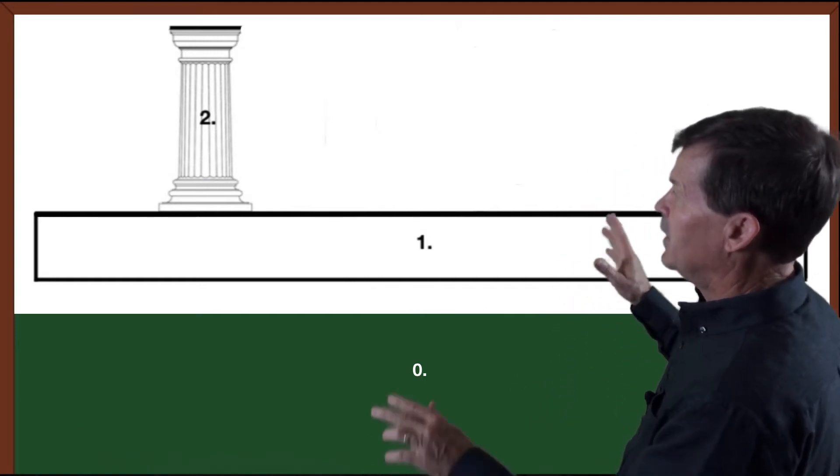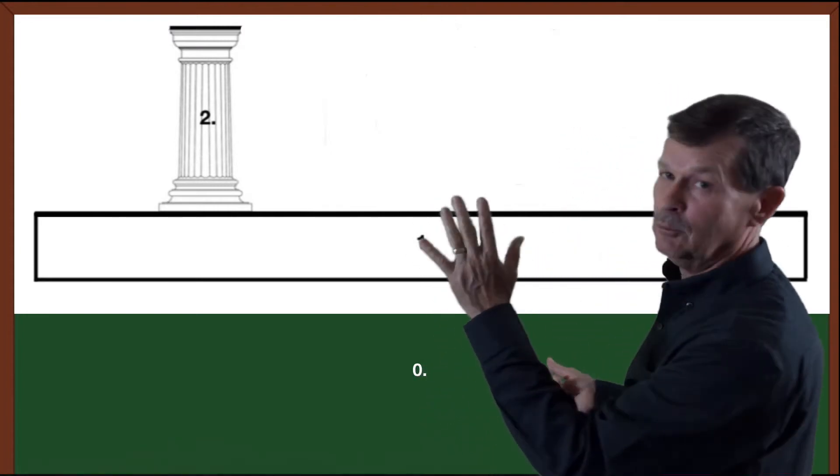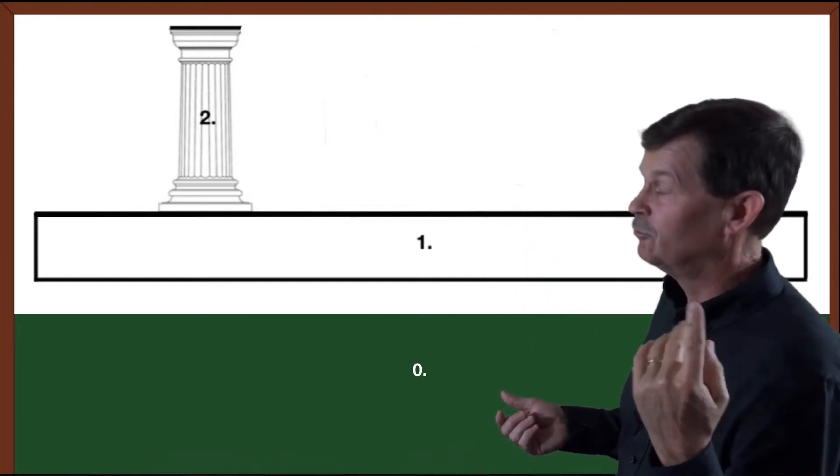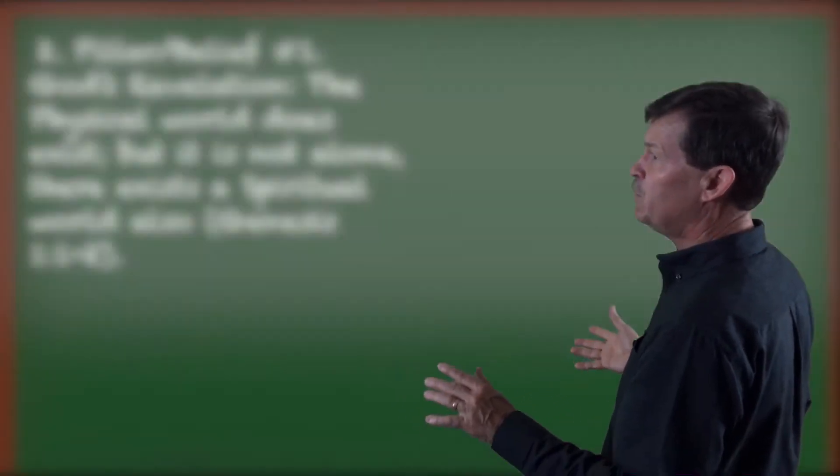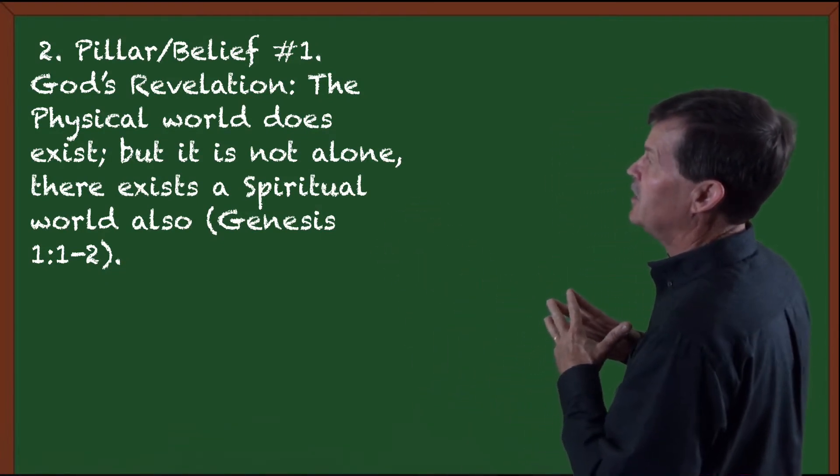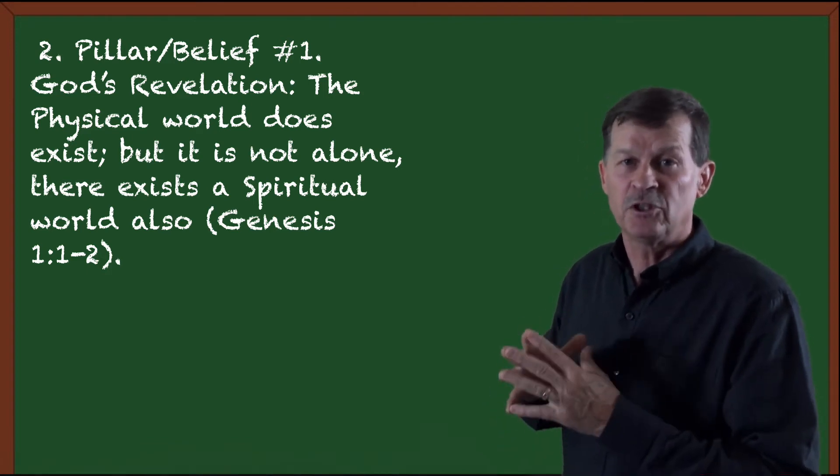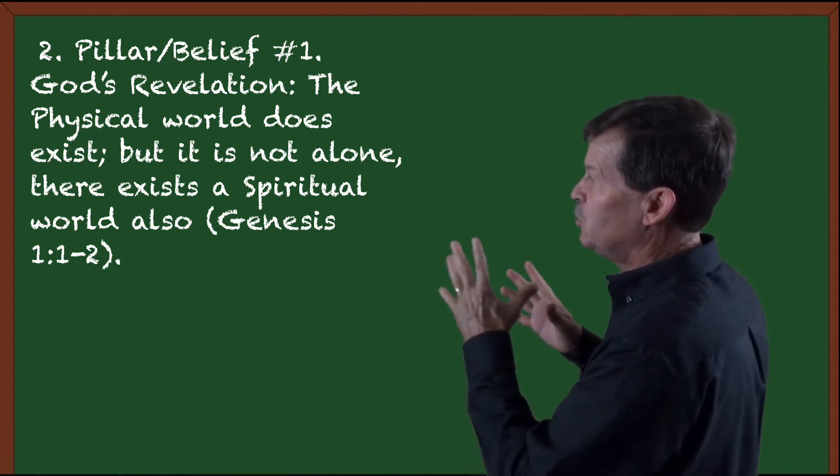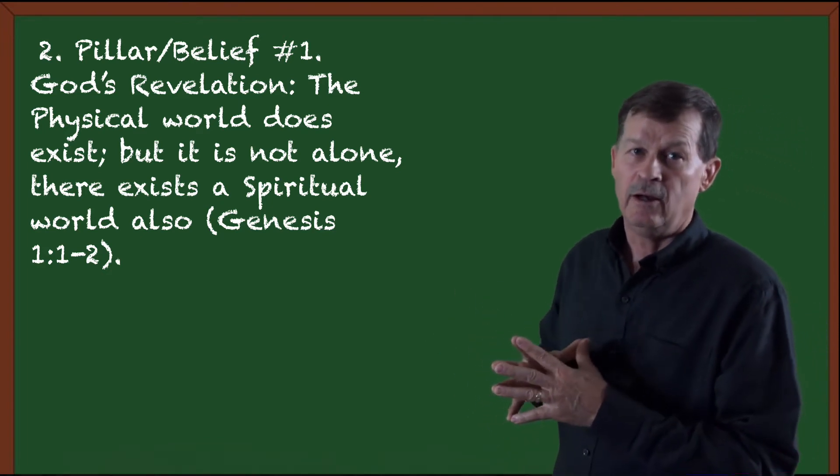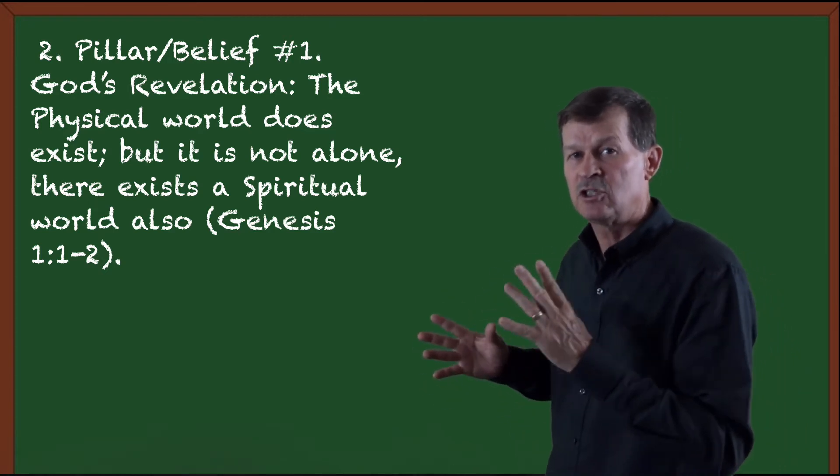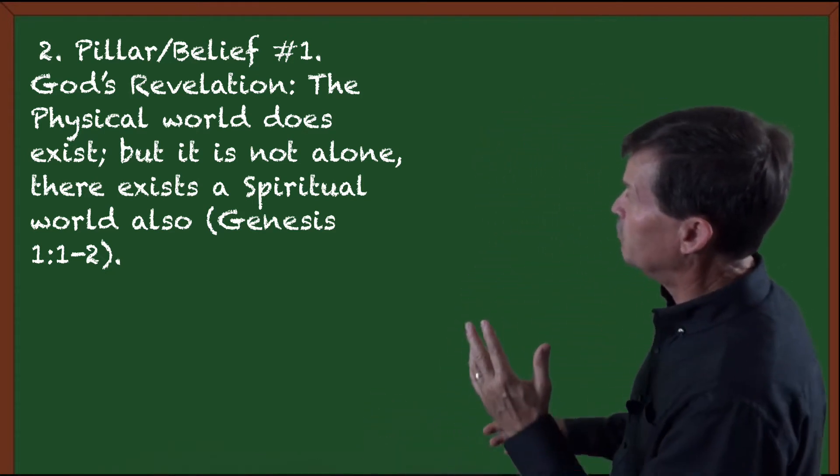So the first column that we have, labeled number two, it's the second element in the house, but the first pillar, first basic belief. What is the first basic belief? The first basic belief, based on God's revelation, is the physical world does exist. Now in the previous house, the physical world does exist. But this one goes on to say, it is not alone. There exists also a spiritual world or spiritual dimension. How do they justify that? It's justified by their foundational source. Where do they get their reliable source of knowledge from?